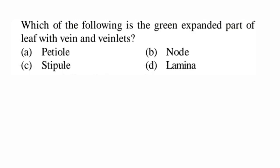Next question: which is the green expanded part of the leaf with veins and veinlets? Options are petiole, node, stipule, and lamina. Petiole is the long structure at the center of the leaf that holds the leaf blade toward sunlight. Node is the region of the stem where the leaf originates. Stipule is a leaf-like structure at the base of the leaf. Lamina is the expanded part containing veins and veinlets. So the answer is D, lamina.